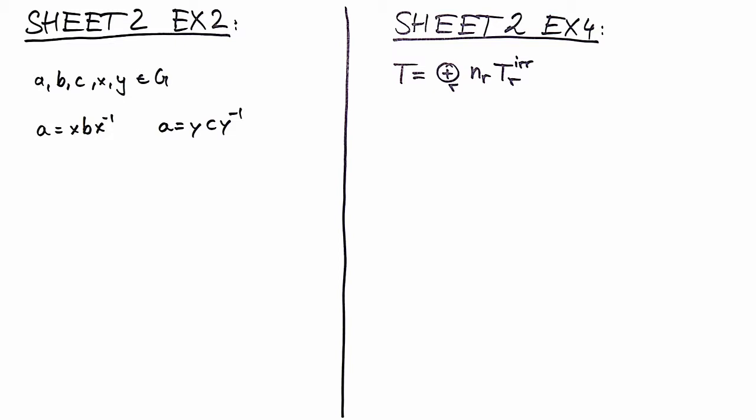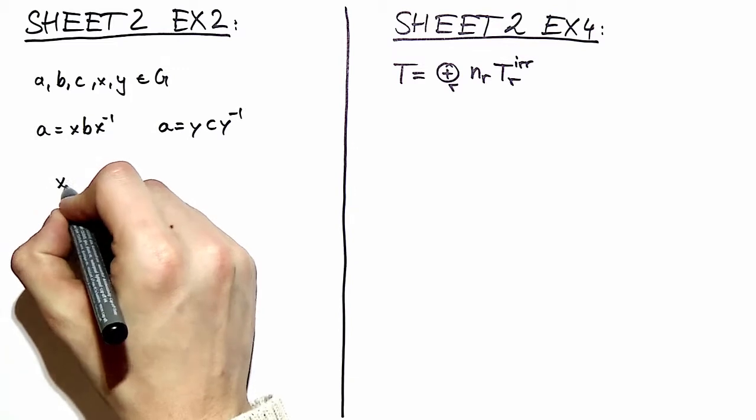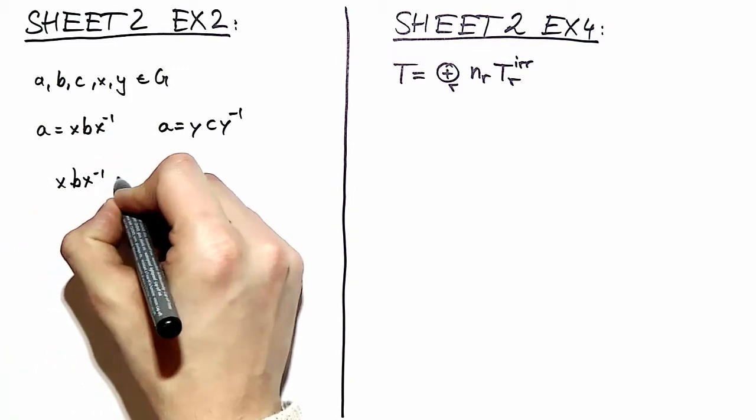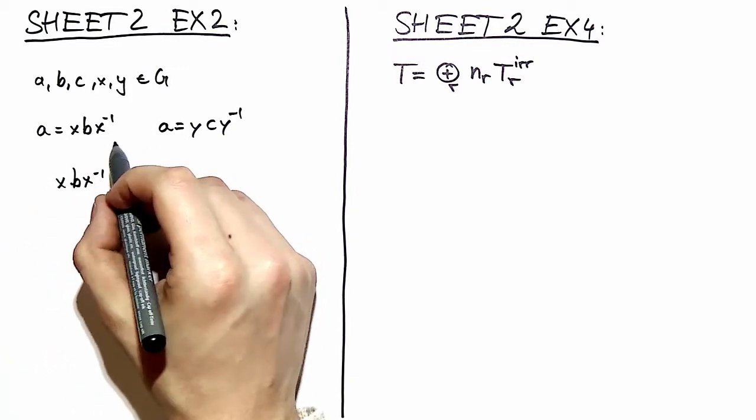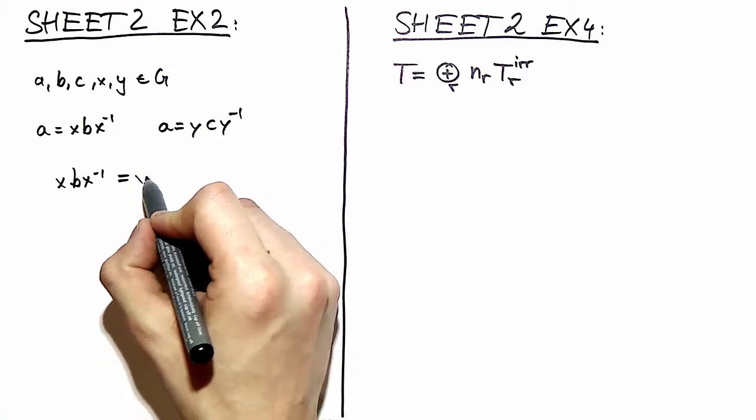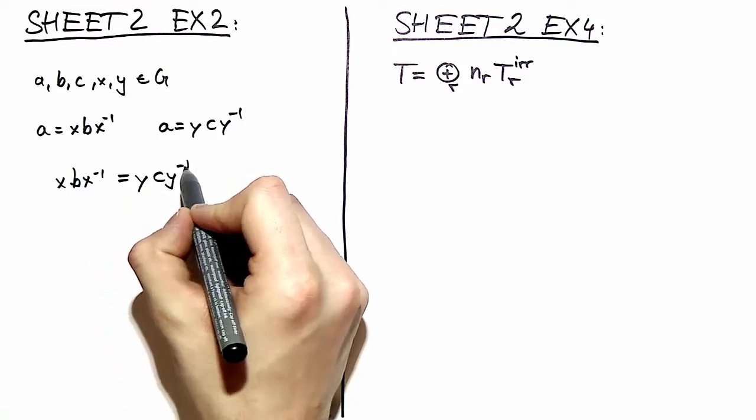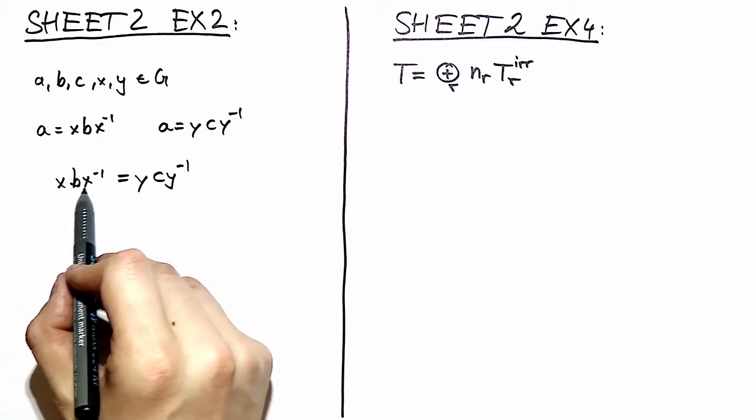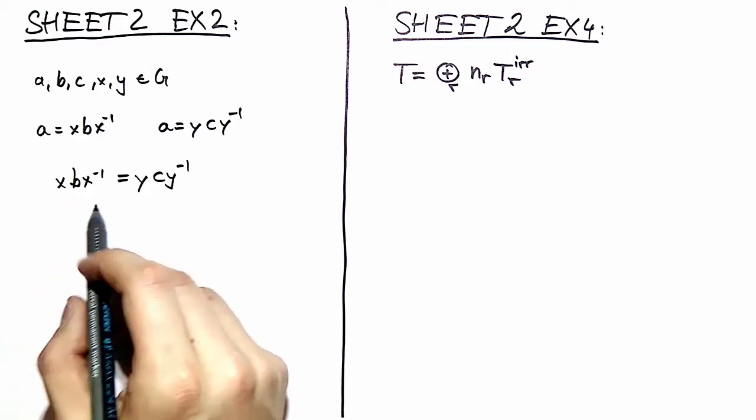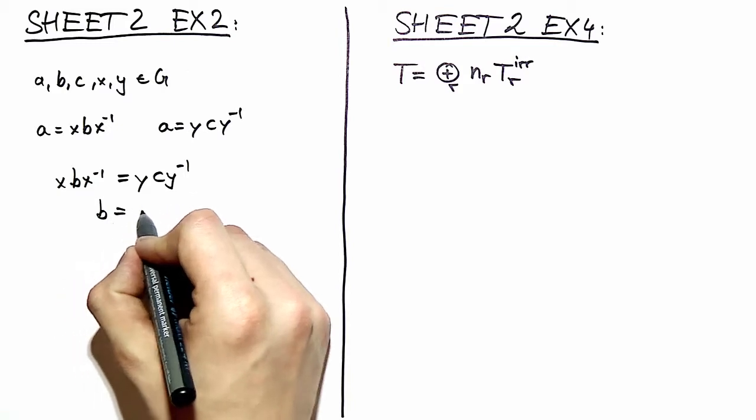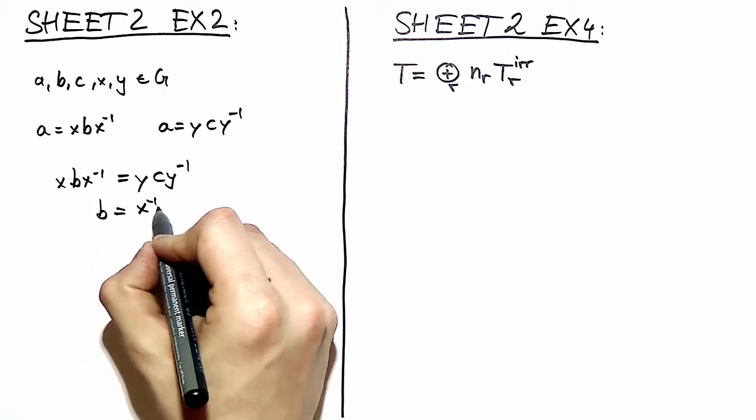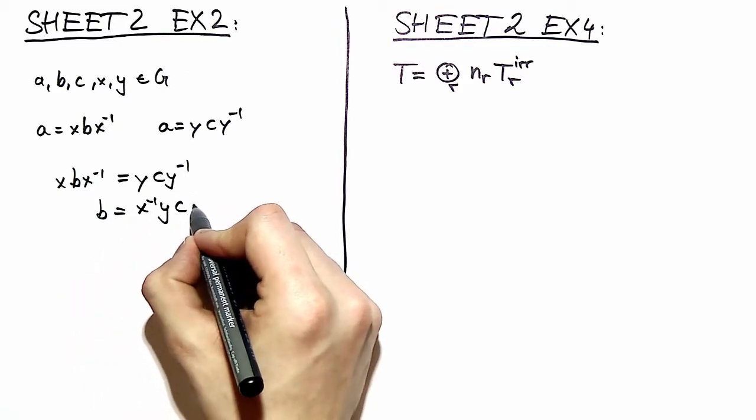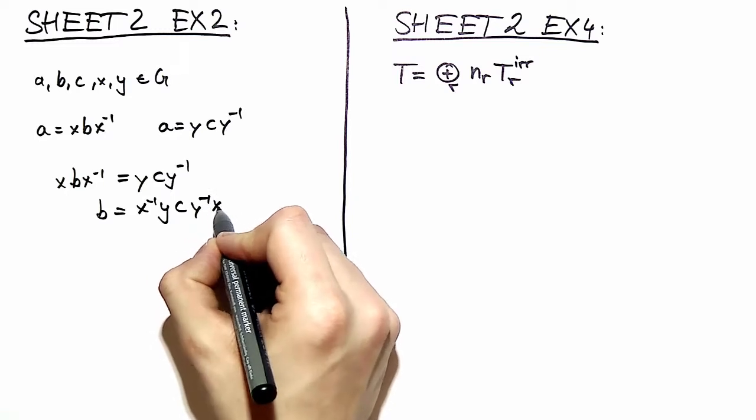Okay, you've got it? There's really no trick here. This is as easy as it looks. We've got just the similarity transform of B equals the similarity transform of C, and all we do is take our element x to the other side. So we've got b = x^(-1) y c y^(-1) x.